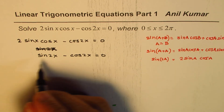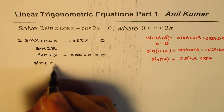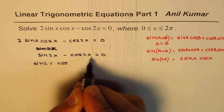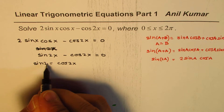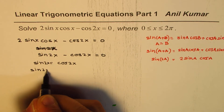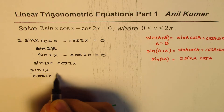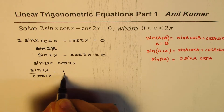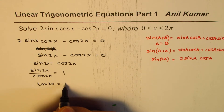So we get sin 2x = cos 2x by taking cos 2x to the right side. Dividing both sides by cos 2x, we get sin 2x over cos 2x = 1, that is tan 2x = 1.